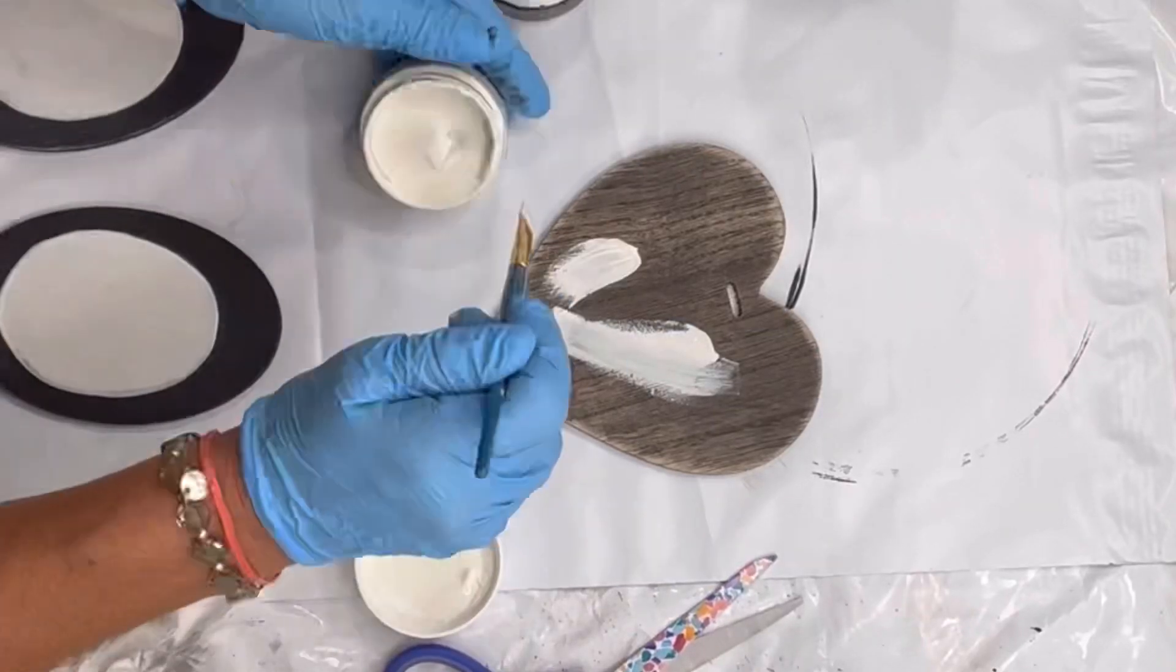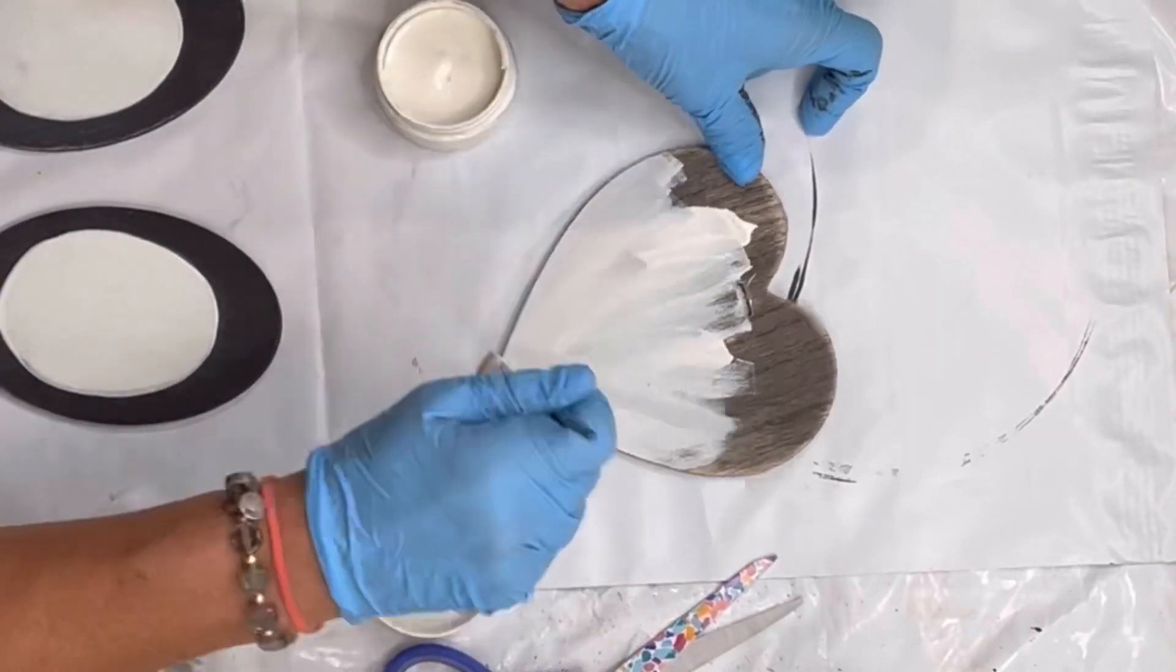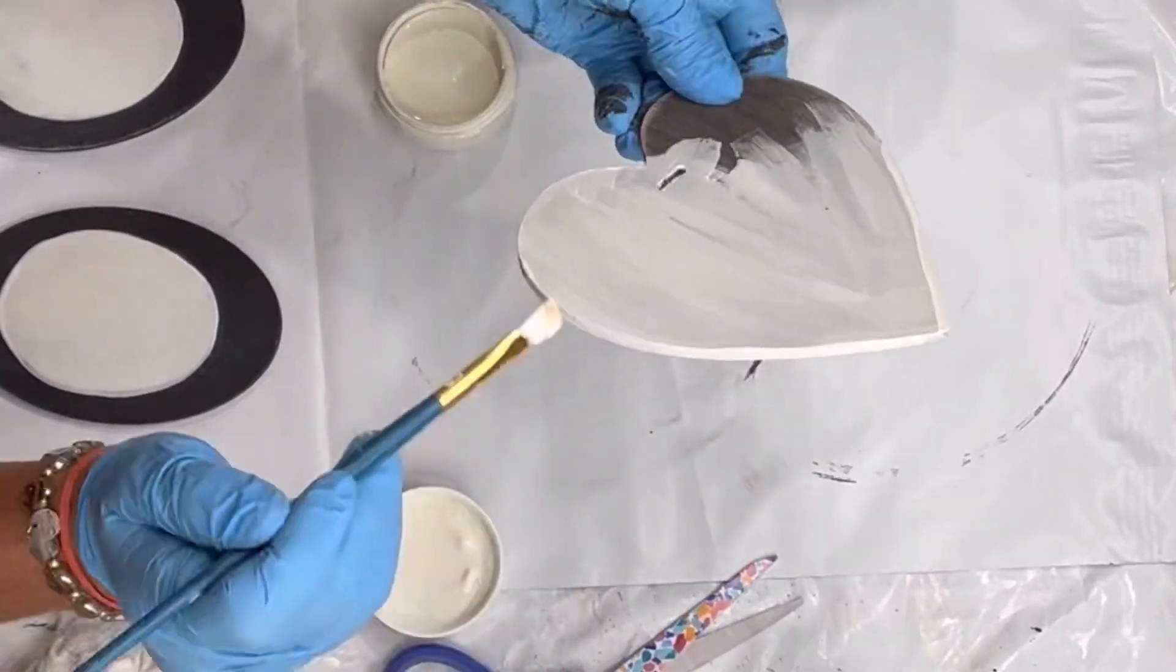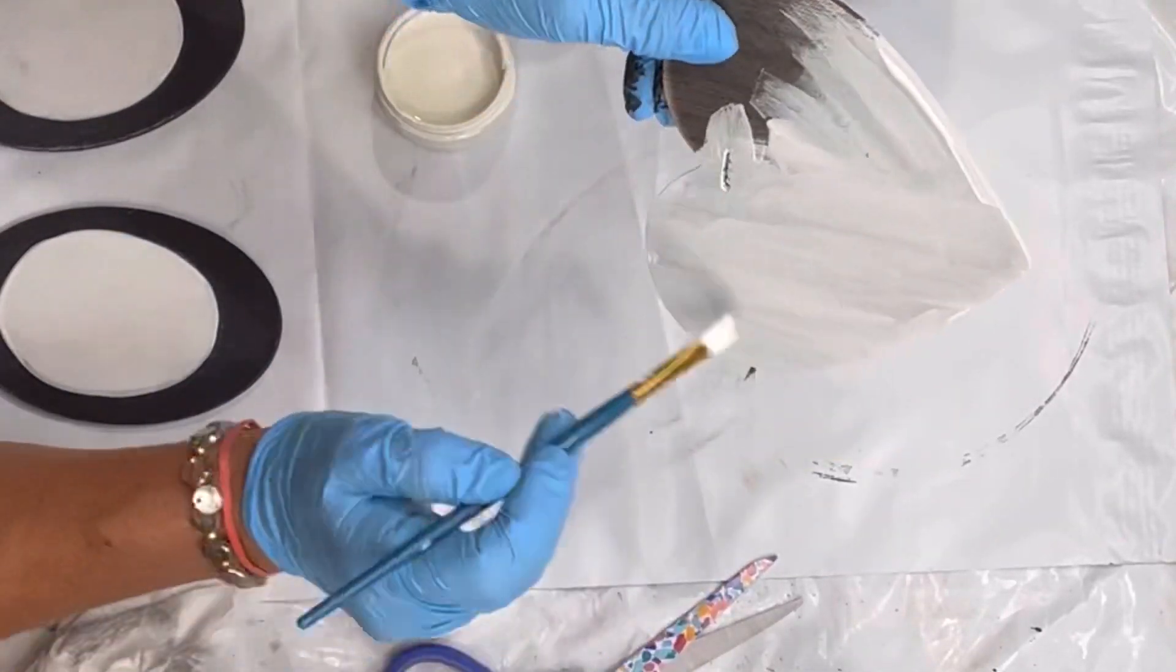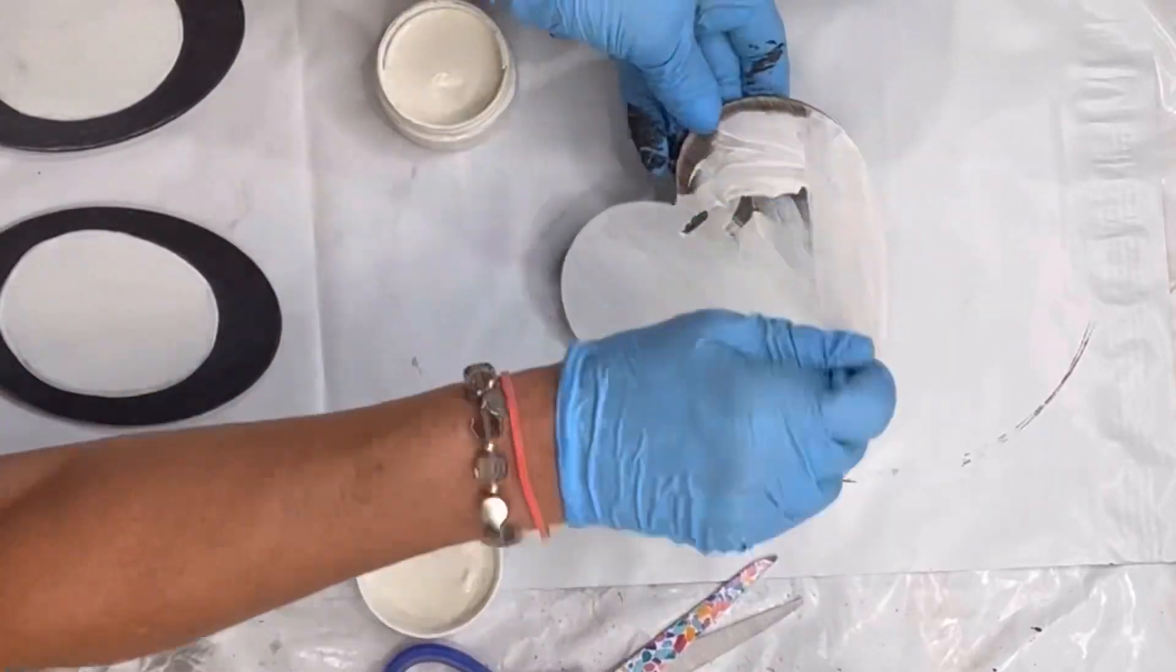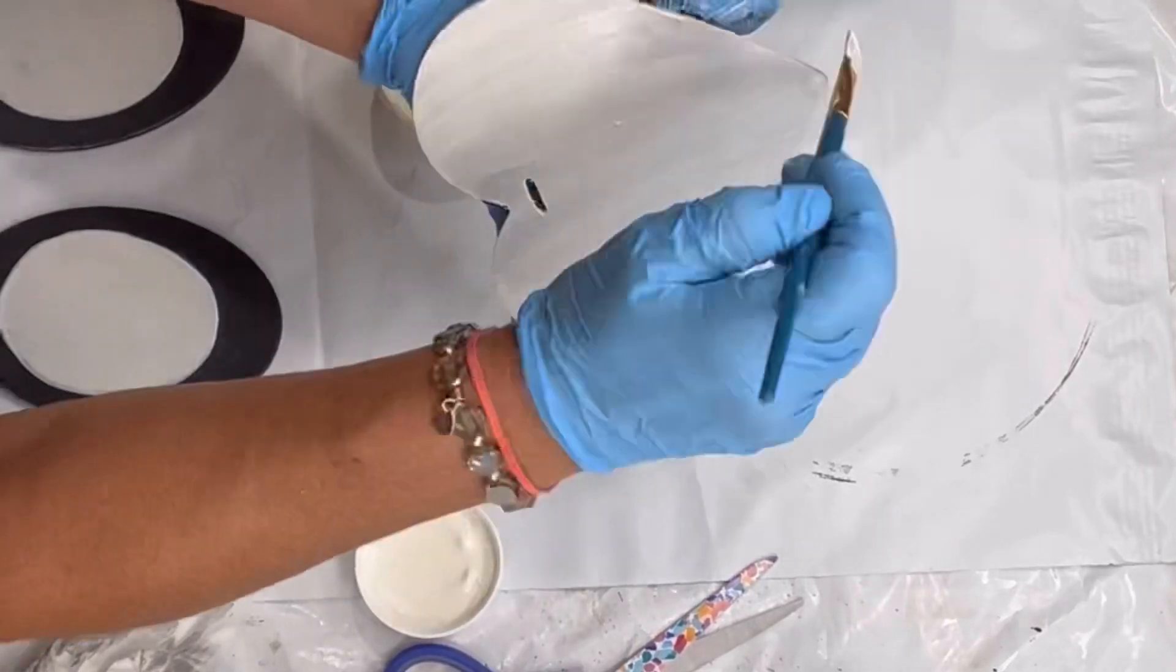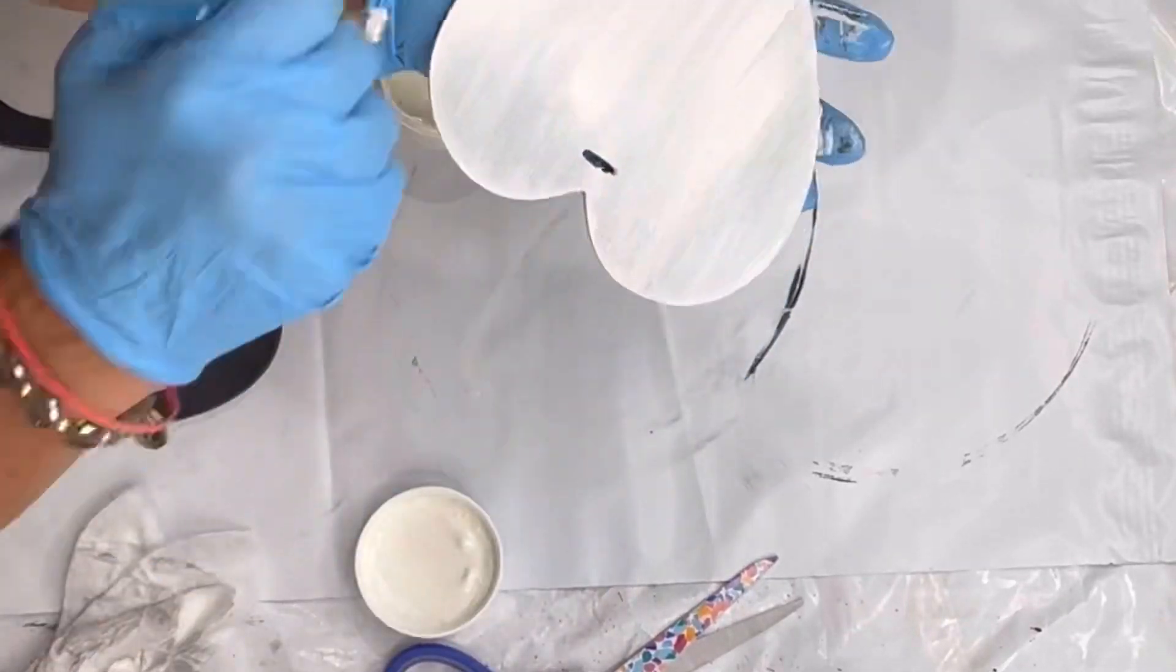I had this heart that I picked up at Target last year for Christmas. They were little ornaments. But you can use a heart cutout from the Dollar Tree leftover from Valentine's, or you can find them at Hobby Lobby or Michael's as well. I painted this with Wise Owl White Primer.